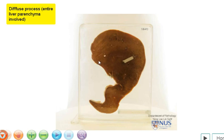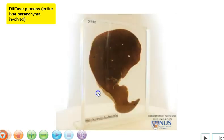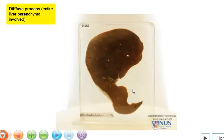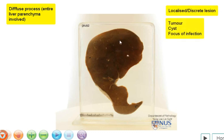This is actually causing some degree of hepatomegaly, or liver enlargement. And when we have a diffuse process that is pretty much uniformly affecting all areas of the parenchyma, the differential diagnosis is actually quite distinct from that of a discrete or localized process or a lesion, such as a mass, a cyst, or a focus of infection like an abscess.